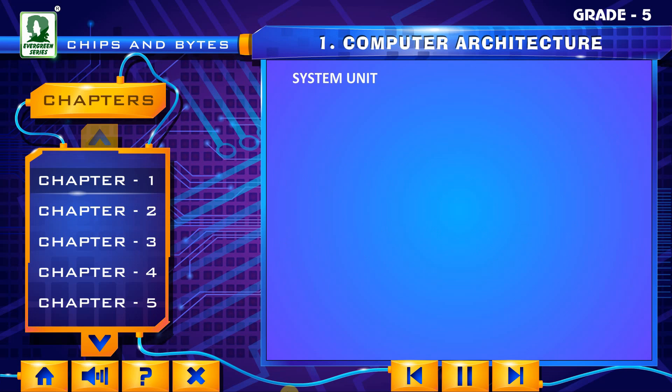Most parts of the computer are found in a box called the system unit. It has the disk drives, central processing unit (i.e., CPU), and the main memory.